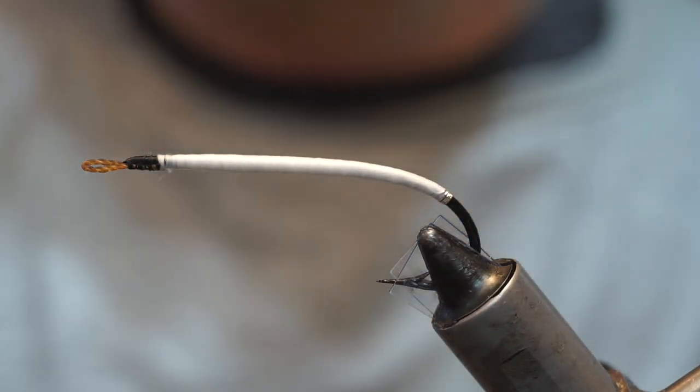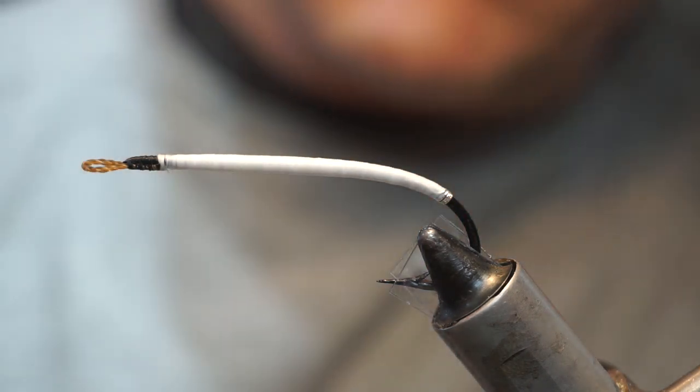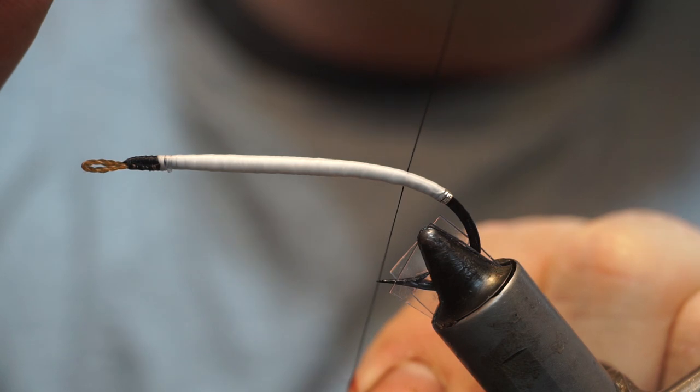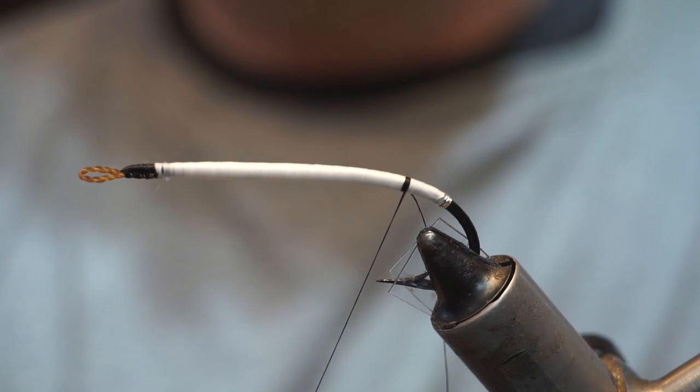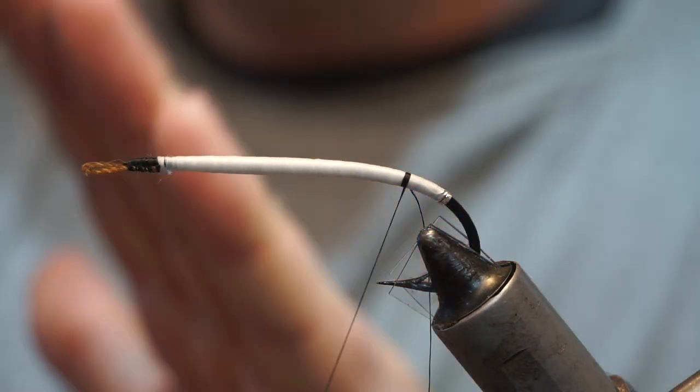And that is our underbody tied. When we want to put on the tag, what we'll do is reattach our tying thread down here. You just have to get it on with a couple of nice solid turns, and then wrap back to that. That will create that continuity of taper through the butt and through the tag and tip.